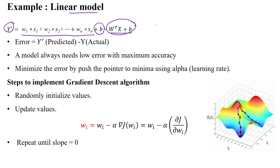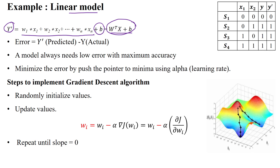After calculating the predicted value y-hat, we compare it with the actual value from the dataset. The dataset has the actual value y and predicted value y-hat. After finding these, we calculate the error between the predicted value and the actual value. Then we apply gradient descent to minimize the error, since the model always needs lower error and maximum accuracy.